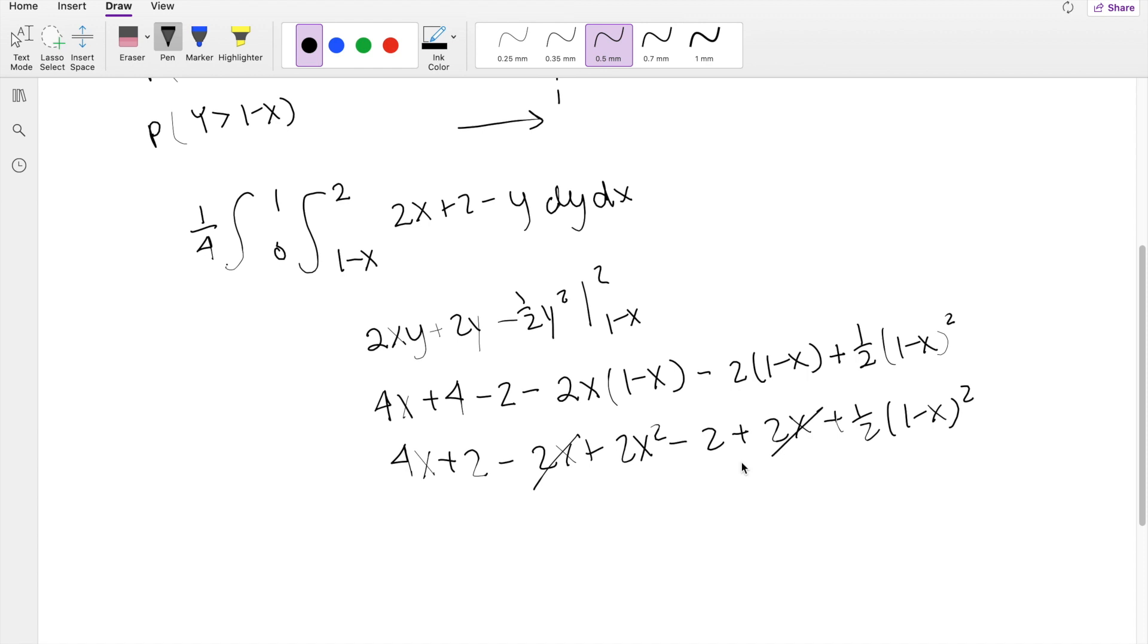And then the 2X's here actually cancel out. The negative 2 and the positive 2 here cancel out as well, so you're left with 4X plus 2X squared plus 1 half times 1 minus X squared.